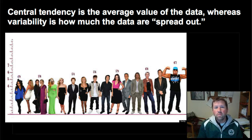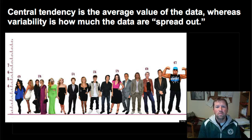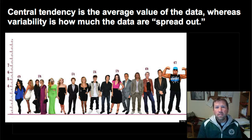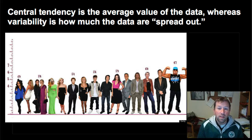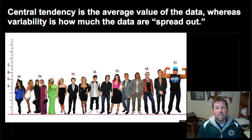For us, we're going to look at two separate concepts: one is central tendency in statistics and one is what's called variability. Central tendency and variability are just two ways of looking at the range of values in a data set.